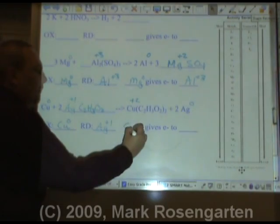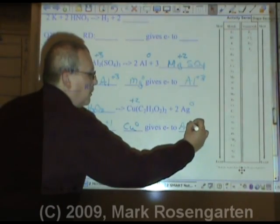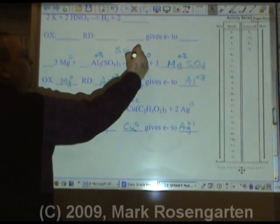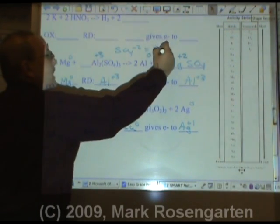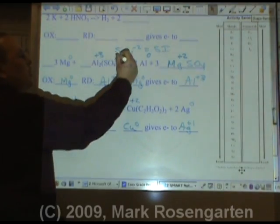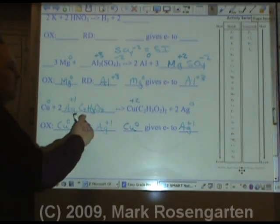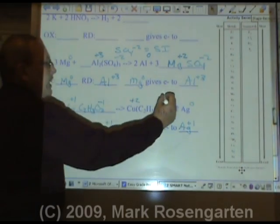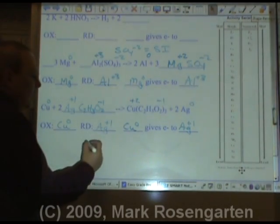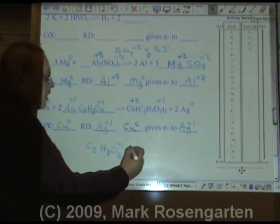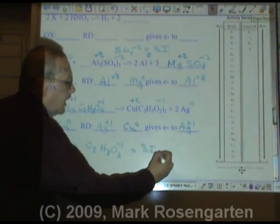Which means the copper zero gives the electrons to the silver plus one. In this reaction, SO4 minus two is the spectator ion. Because its charge remains minus two on both sides. In this reaction, the acetate ion remains minus one on both sides. Therefore, C2H3O2 with a minus one charge is the spectator ion.